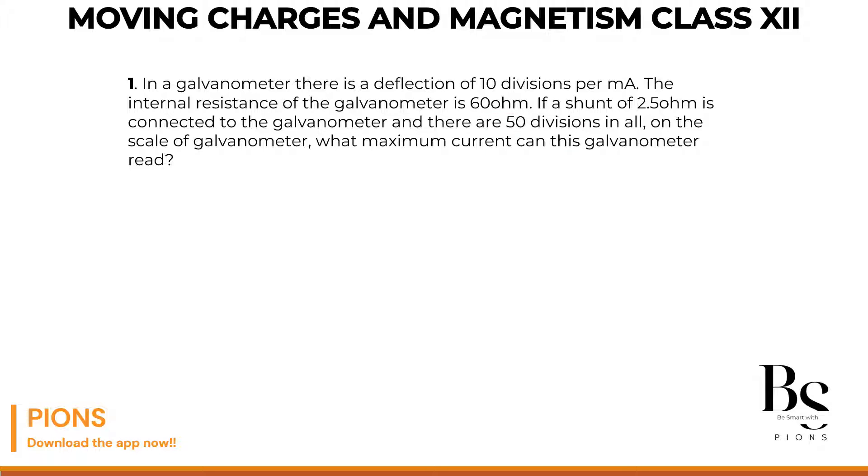So let me just write this as internal resistance as RG. So RG is internal resistance of the galvanometer, which is 60 ohms. If a shunt resistance, let's call it as capital RS, which is 2.5 ohms because this is converted into ammeter.